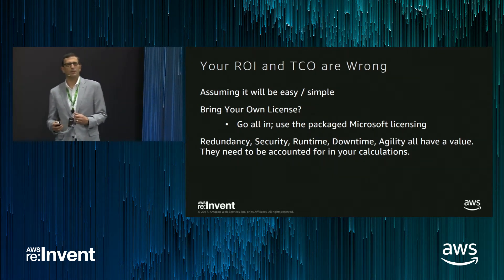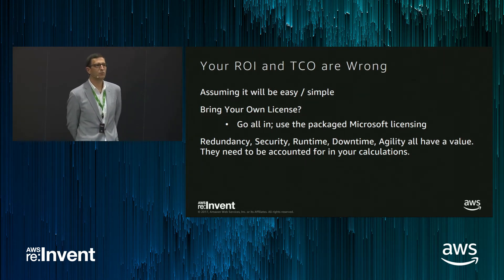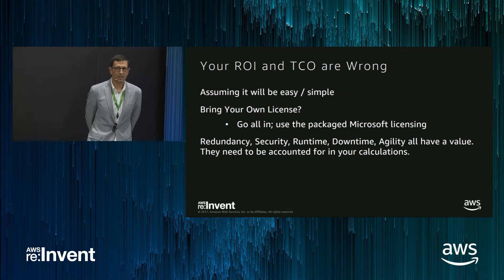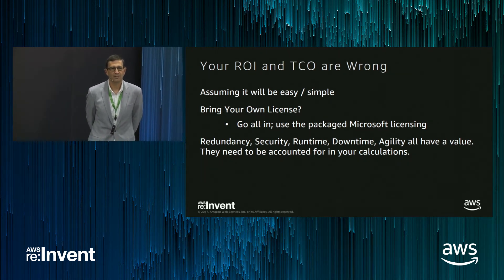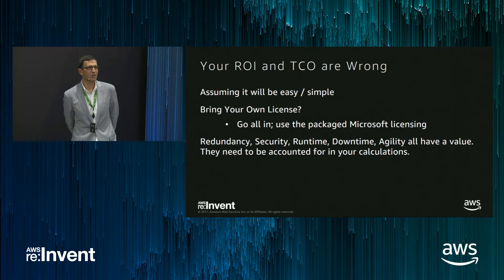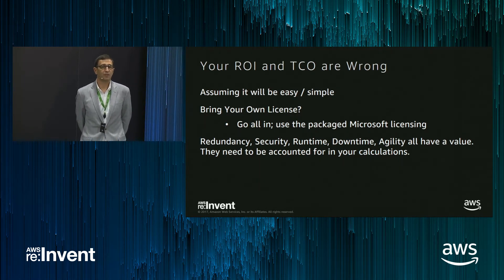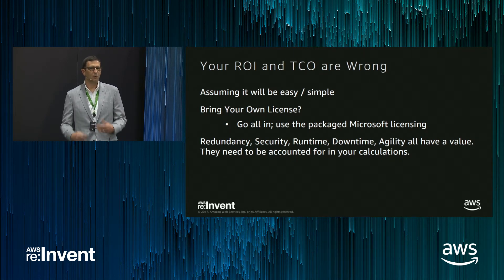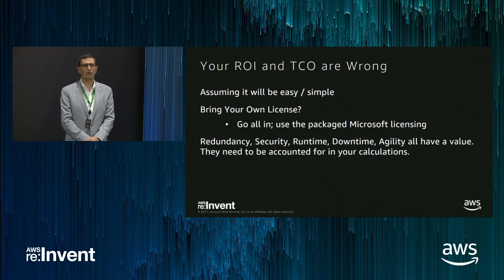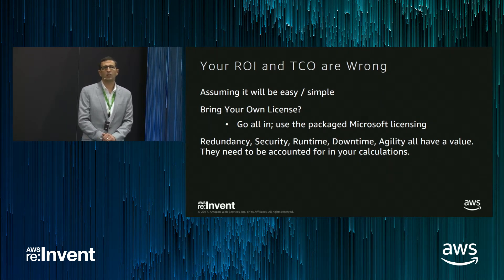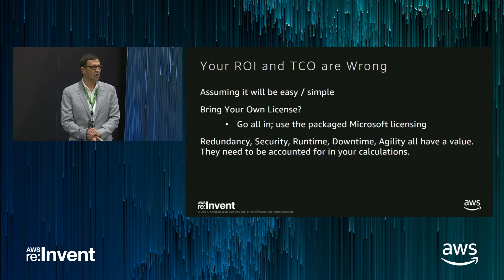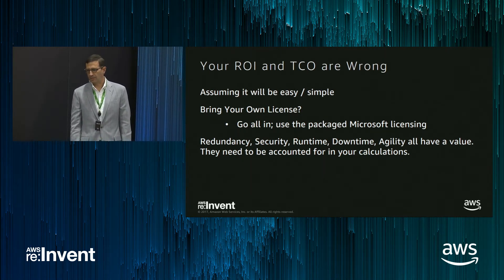Another common mistake is customers assuming they can use their existing Microsoft licensing. At large scale, a customer might have an enterprise agreement, but our experience is that bringing your own Microsoft licensing into the Amazon WorkSpaces environment is very hard to justify. Generally, you probably aren't licensed correctly and don't have the right software assurance or usability rights to use it in the cloud. We strongly recommend selecting the bundles that already have Windows licenses included and factoring that into your ROI model so your numbers make sense.